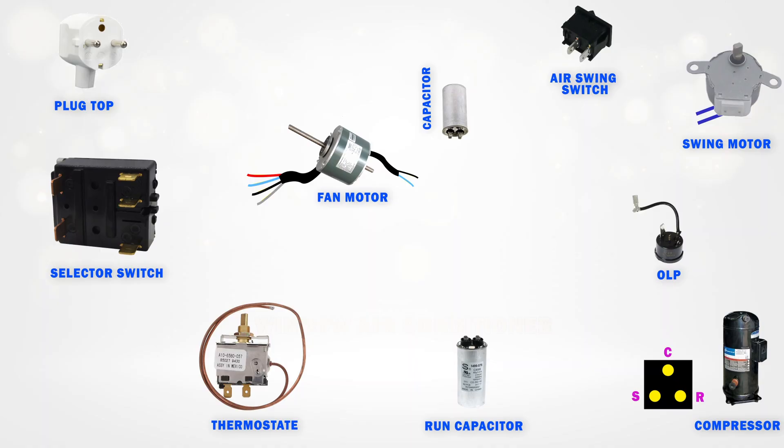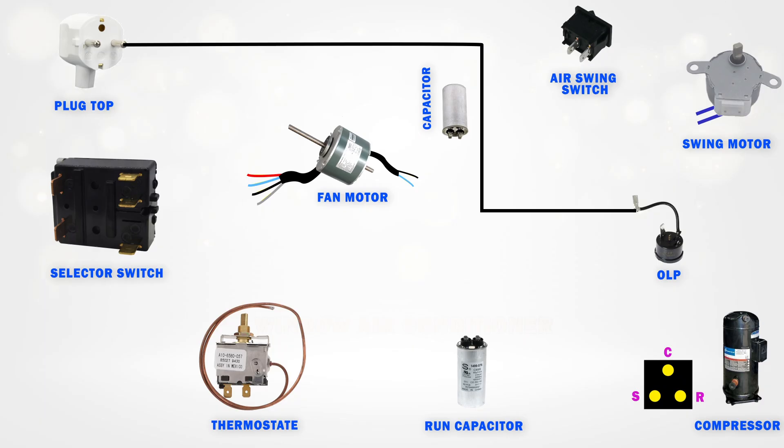Now, let's move on to the output terminal of the OLP. First, we connect neutral from the left pin of the plug top to the input side of the OLP. Then, from the output terminal of the OLP, we connect a wire to the common C terminal of the compressor. Always remember, neutral should be connected to the common terminal of the compressor.